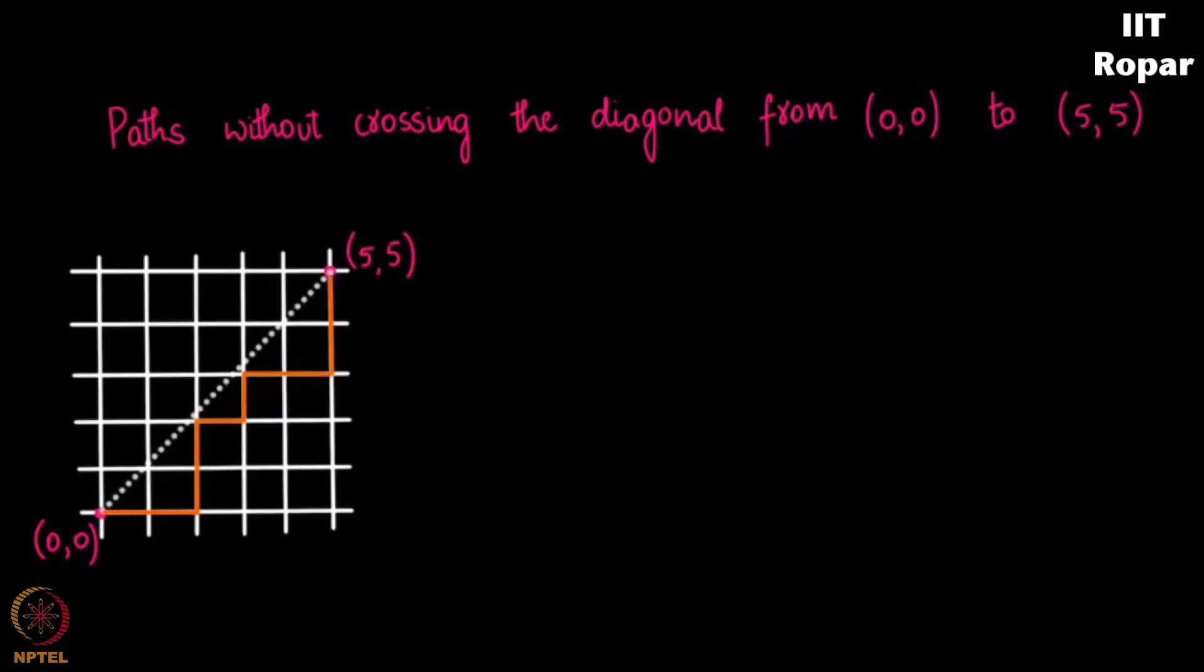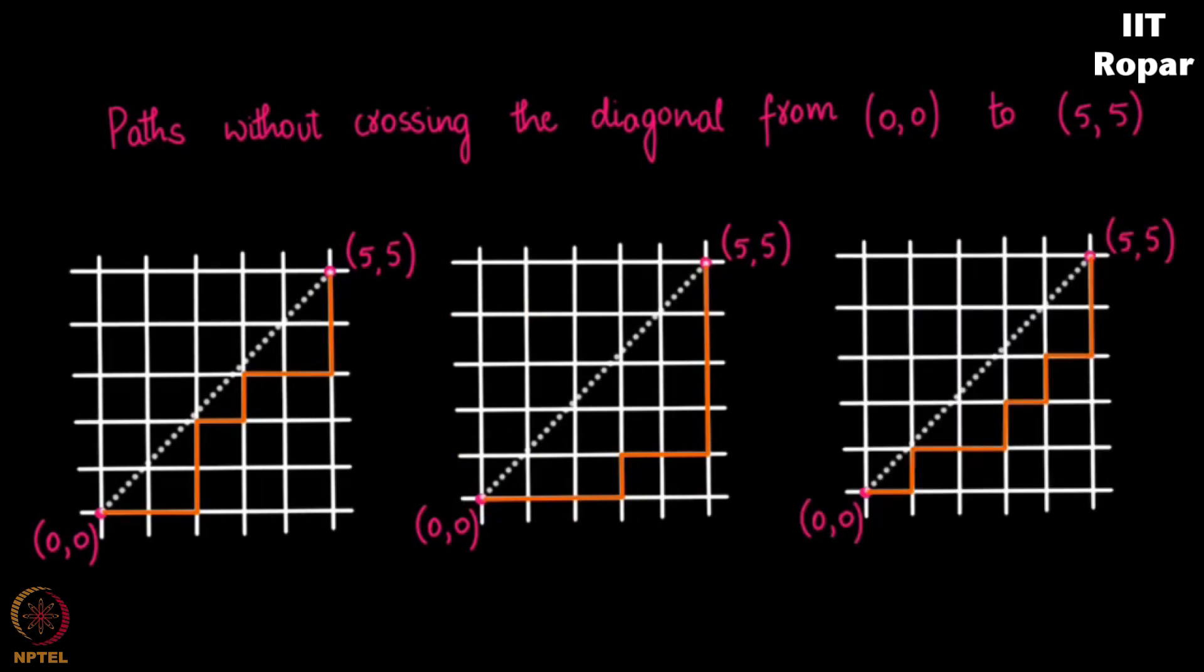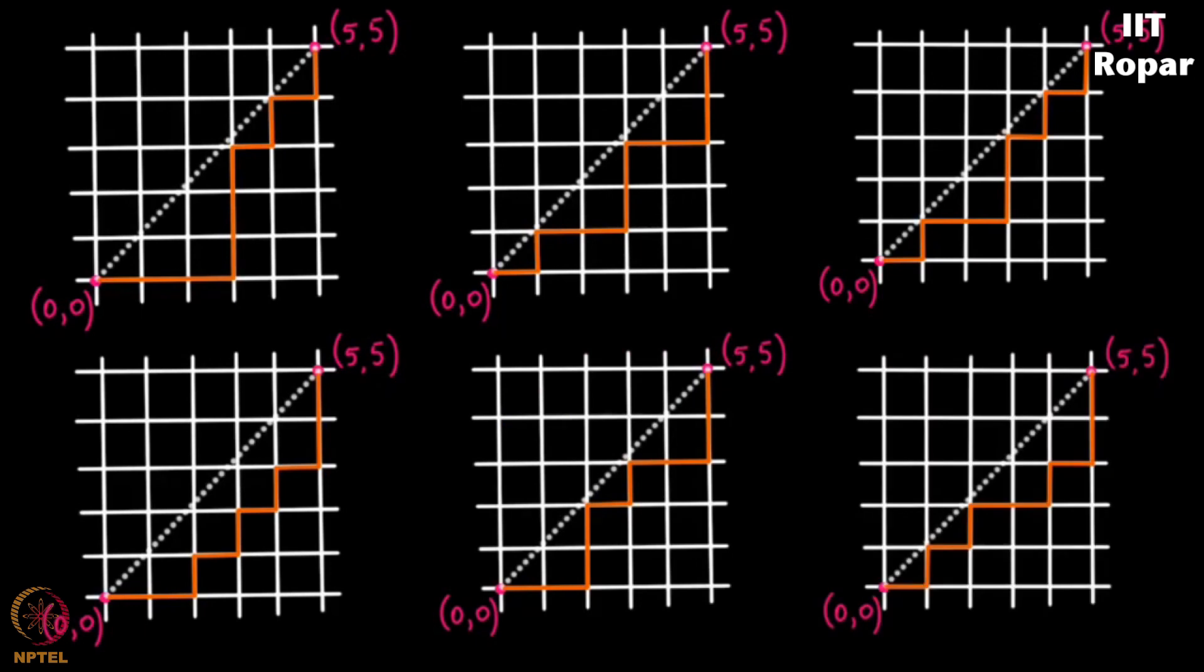I have tried all the possibilities manually for the total number of paths without crossing the diagonal from (0,0) to (5,5). Let me show you - this is one possibility, this is another one, this is yet another possibility, and so on. It might surprise you that there are 42 such possibilities to go from (0,0) to (5,5) without crossing the diagonal.